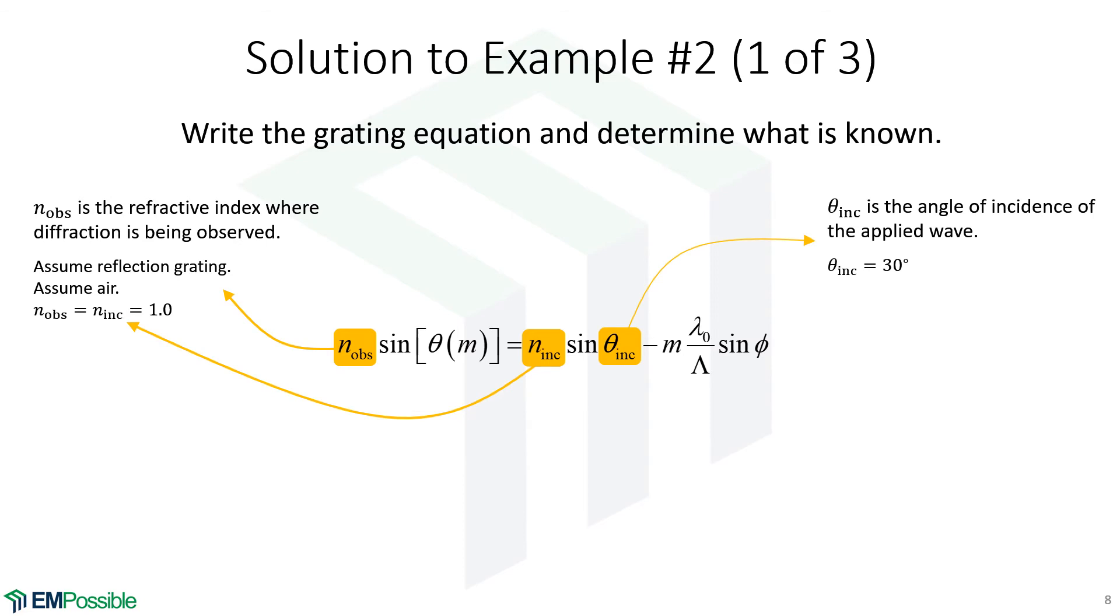The angle of incidence, that was easy. It was given to be 30 degrees. And we know later on, sine of 30 degrees is 0.5. So that will be a handy, useful number.